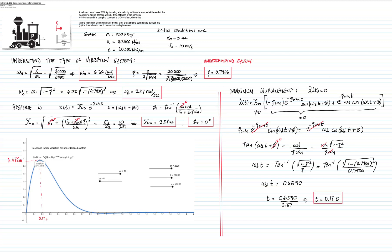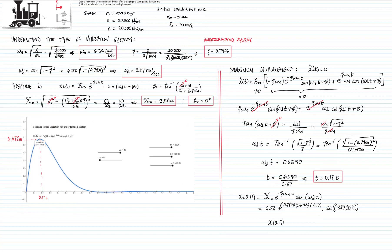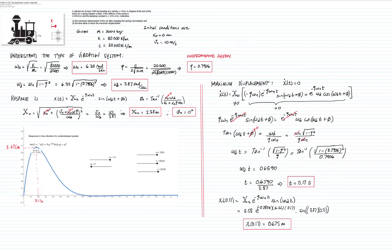Now we substitute t = 0.17 seconds back into the response equation with all values: amplitude X = 2.58, ζ = 0.7906, ωn = 6.32, and phase angle φ = 0. Be careful with rounding errors and carry all decimals. Evaluating x(0.17) gives a maximum displacement of 0.675 meters, confirming our graphical result. This represents the complete solution to the problem.